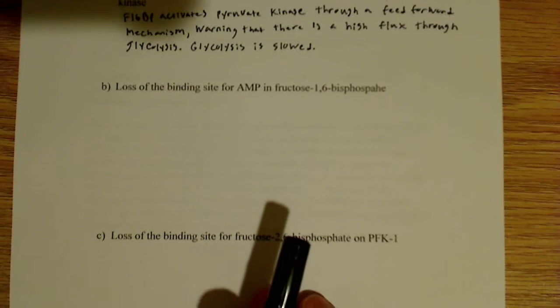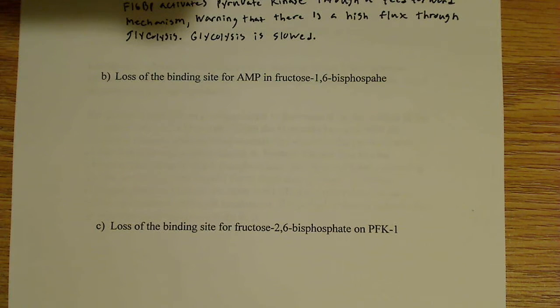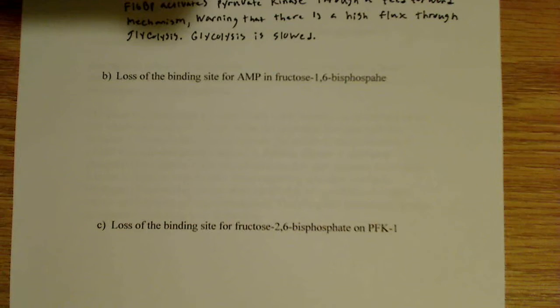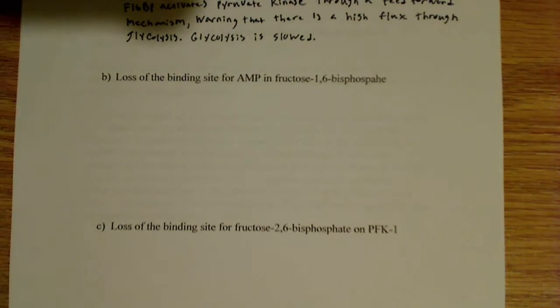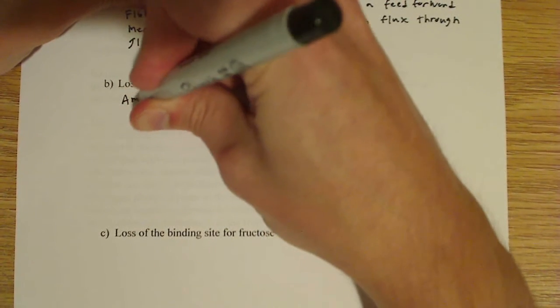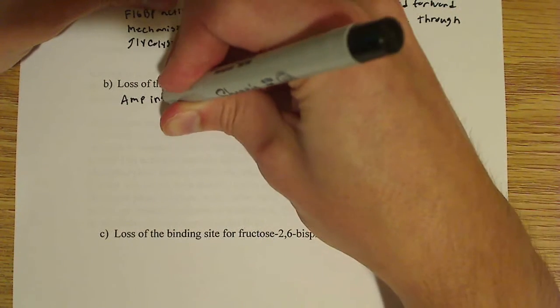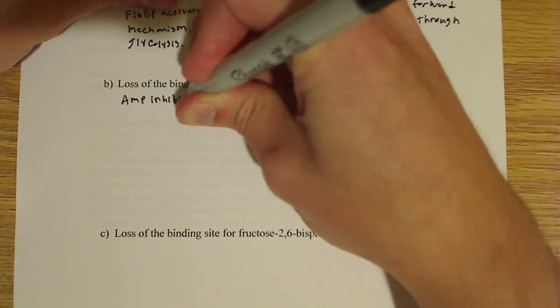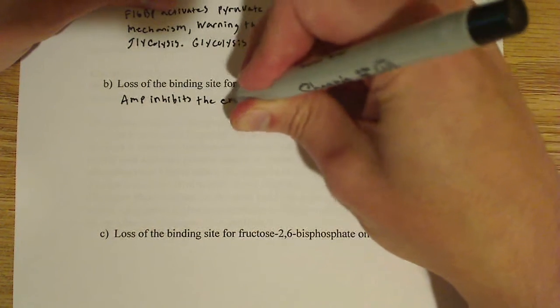The next thing is part B: the loss of the binding site for AMP. Remember, AMP is a signal that the cell is low on energy. So if there's a loss of the binding site for AMP and fructose-1,6-bisphosphate, what's going to happen? Well, AMP inhibits the enzyme.